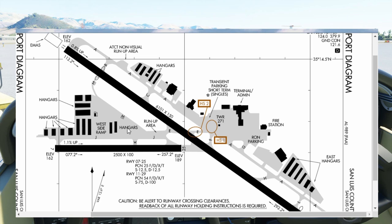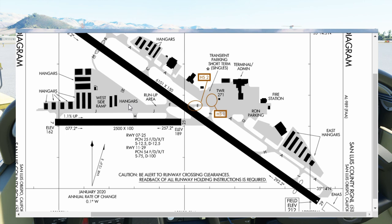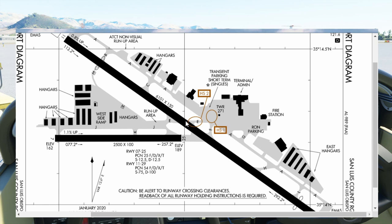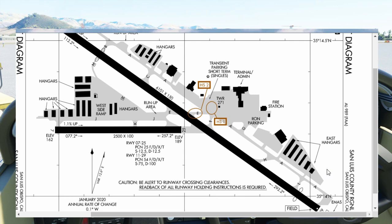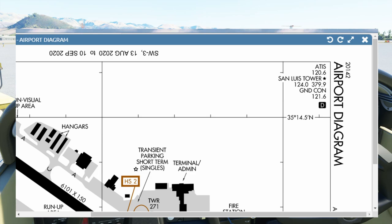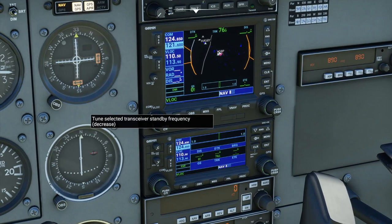Now that we know runway 29 is in use, we're going to look at our expected taxi route — always thinking one step ahead. We're parked at the west side ramp, so we'll likely be taxiing via Juliet, Echo, and Alpha to get to the full length of runway 29. This means we can expect to cross a runway in our taxi instructions and we need to be ready for that from ground control. Maybe they'll assign us runway 25 and throw us a curveball — we need to be ready for everything. Our ground frequency is 121.6 and we'll tune that up in the cockpit. Our tower frequency is 124.0, both from the same chart.